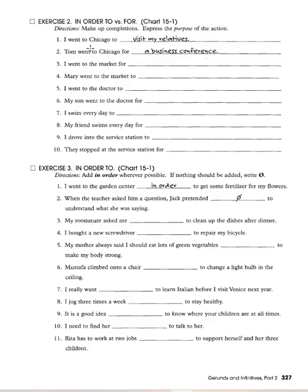Here are more examples contrasting 'to' and 'for': 'I went to Chicago to visit my relatives.' 'I went to Chicago for a business conference.' 'Mary went to the market to buy groceries.' 'I went to the doctor to get a physical.' 'My son went to the doctor for a broken foot.' 'I swim every day to become healthy.' 'My friend swims every day for physical fitness.' When you use 'for,' you need a noun as the object of the preposition.